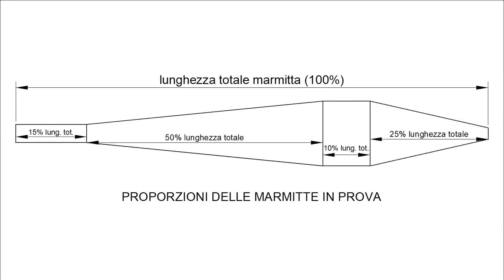Every muffler we'll take into exam will have the same proportions: 50% header, 50% diffuser, 10% belly, 25% baffle. Setting a single parameter for all the mufflers helps us to compartmentalize, which is the aim of this study.